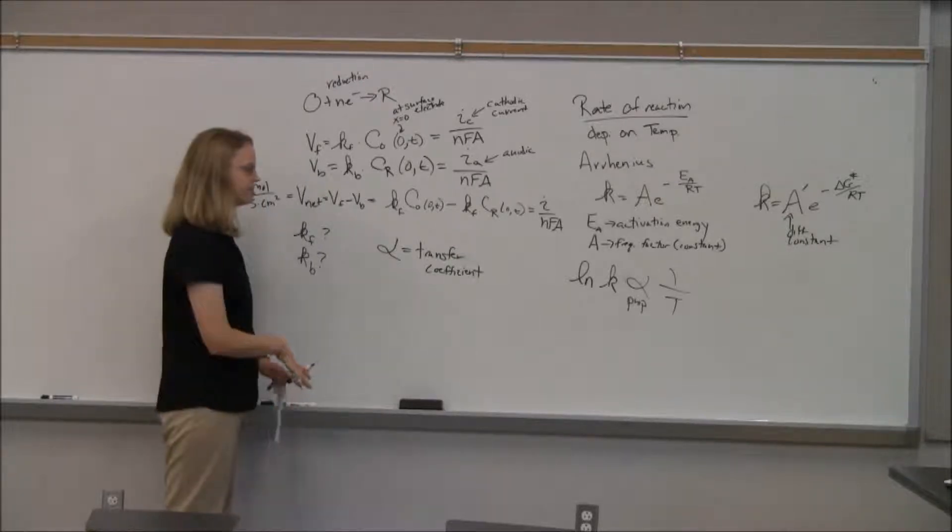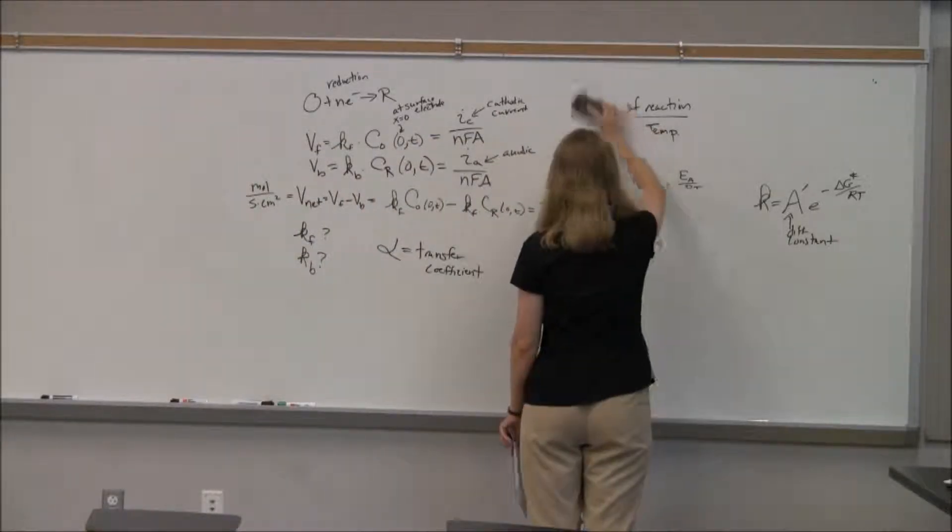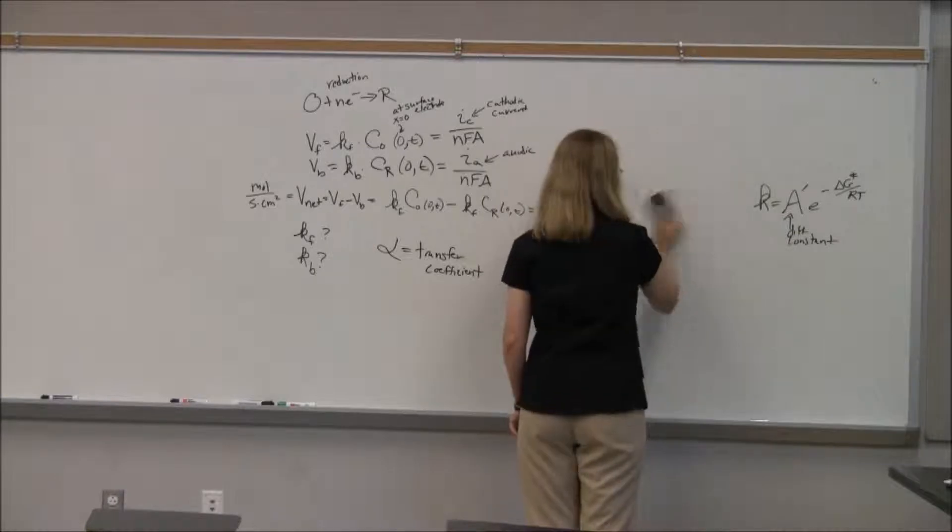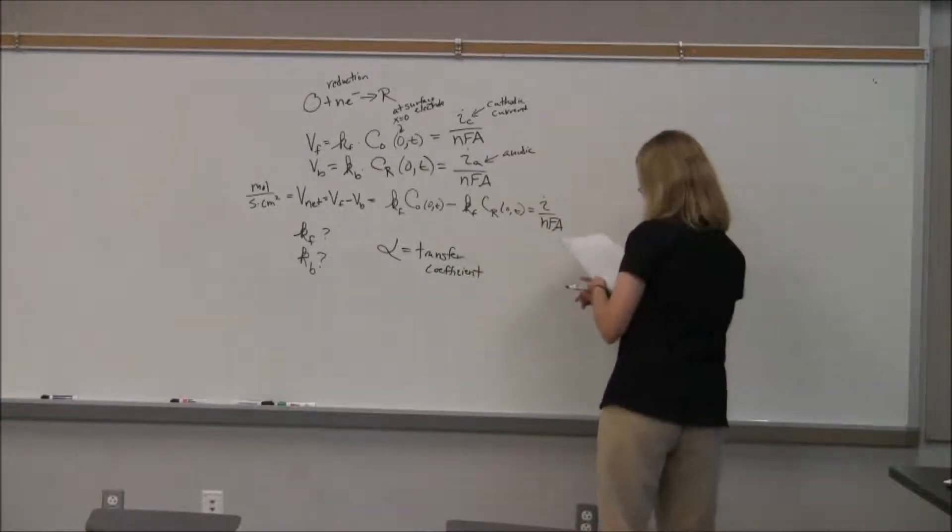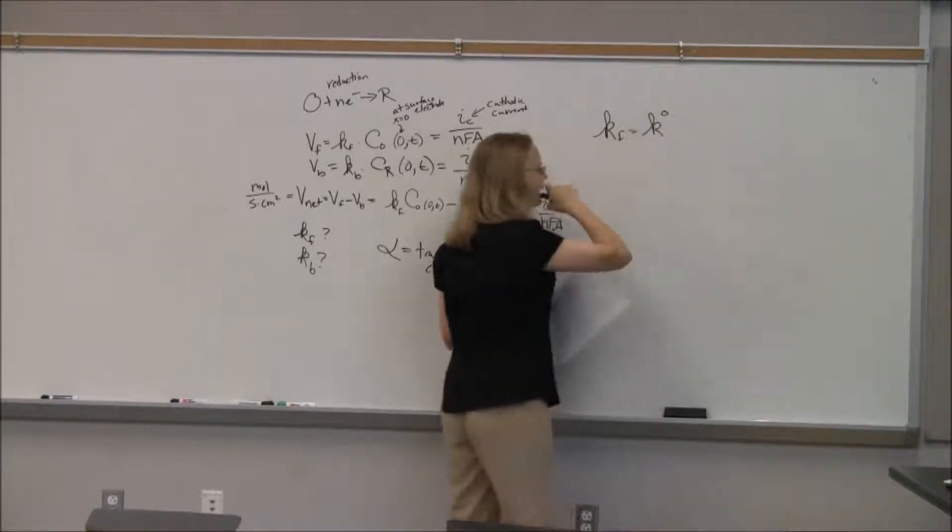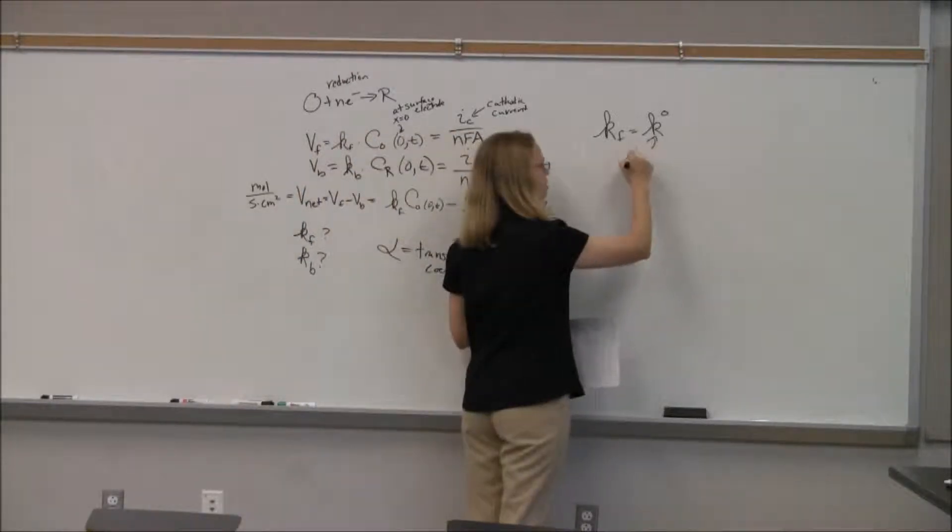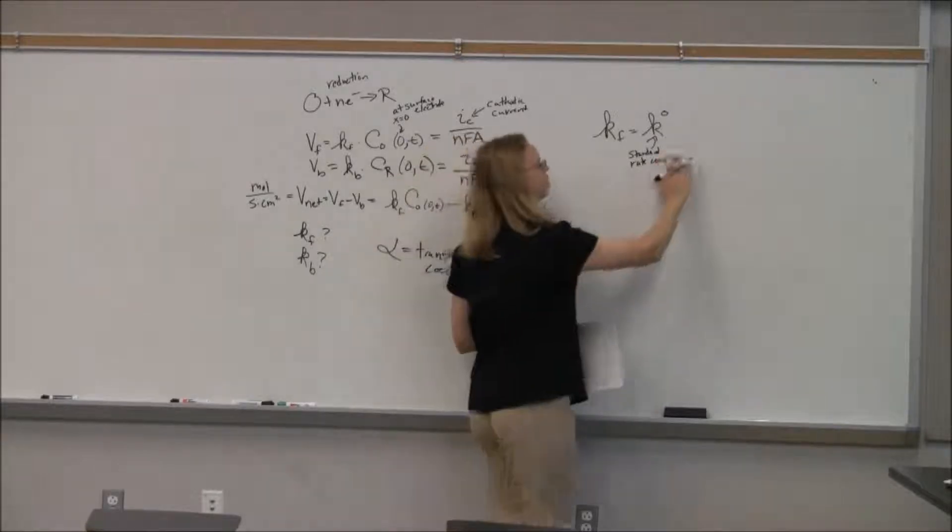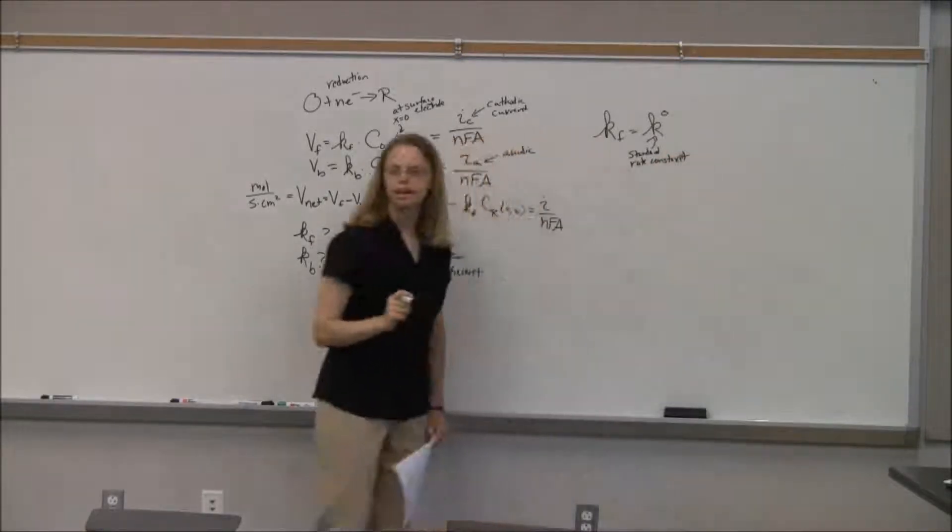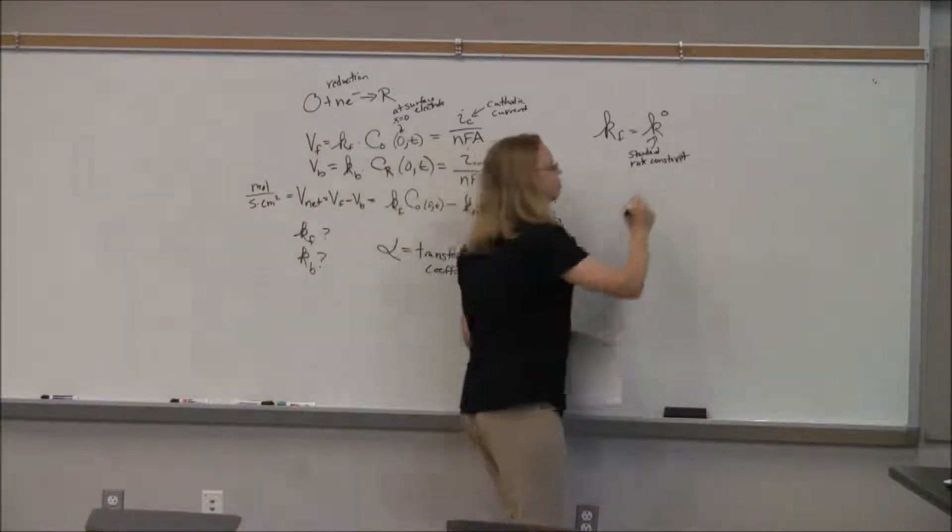So this is where I'm going to skip. But you can look at the diagrams in the book. They do a really fancy diagram to pull out a parameter that they call alpha from a delta G reaction diagram. So if you want to see where alpha comes from on a diagram, I'm not going to attempt it here. So alpha, it's called the transfer coefficient.